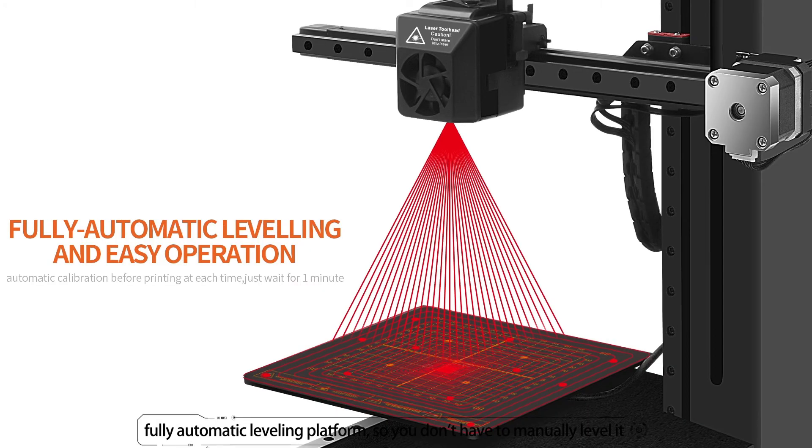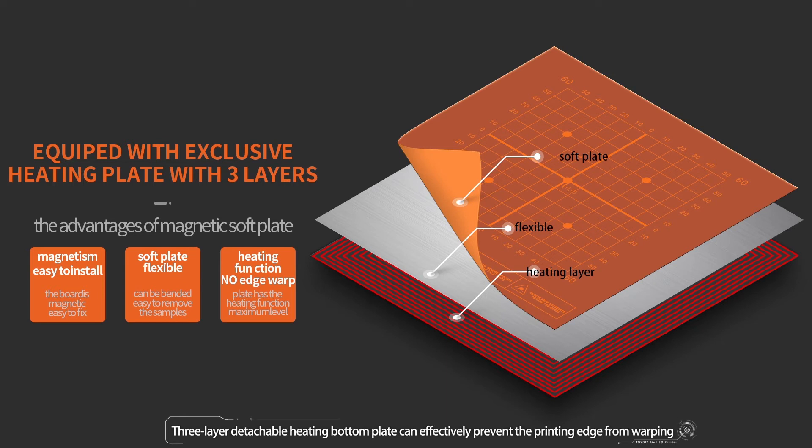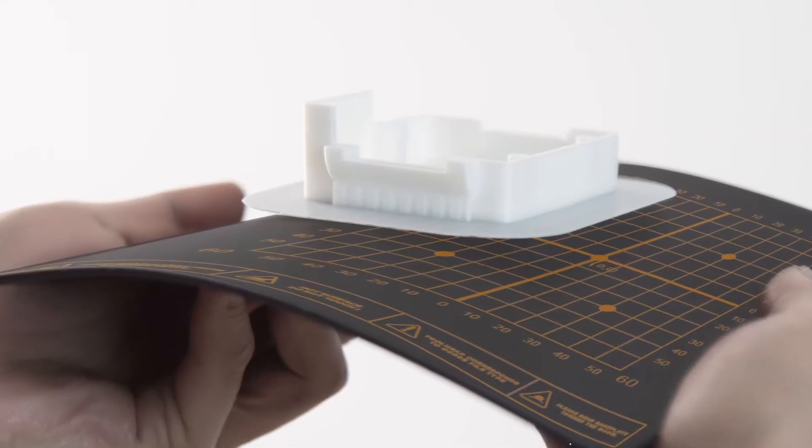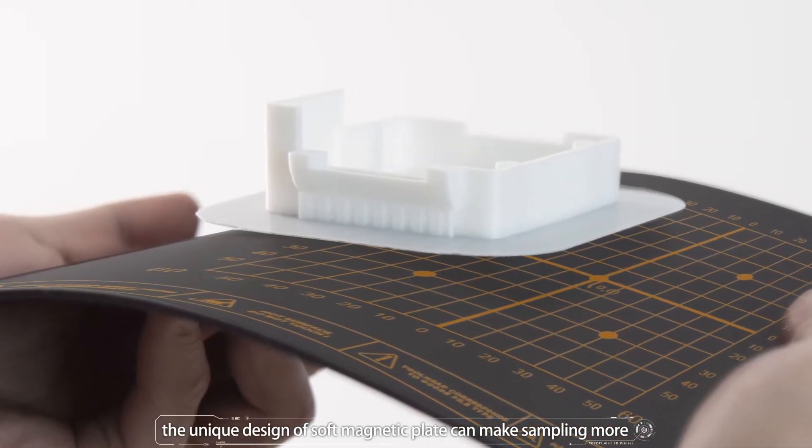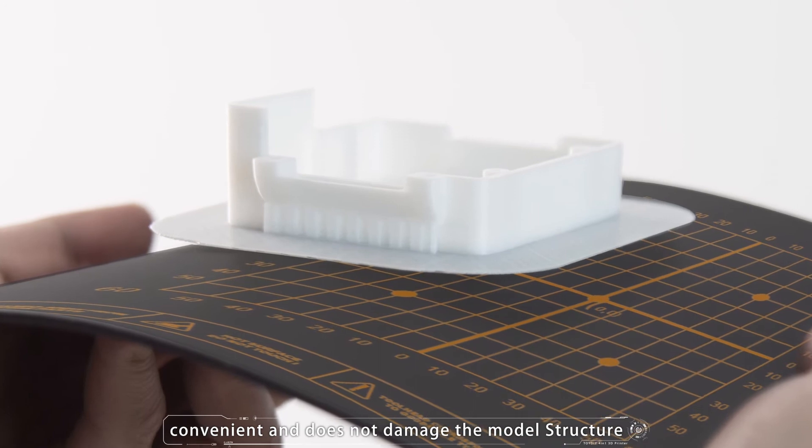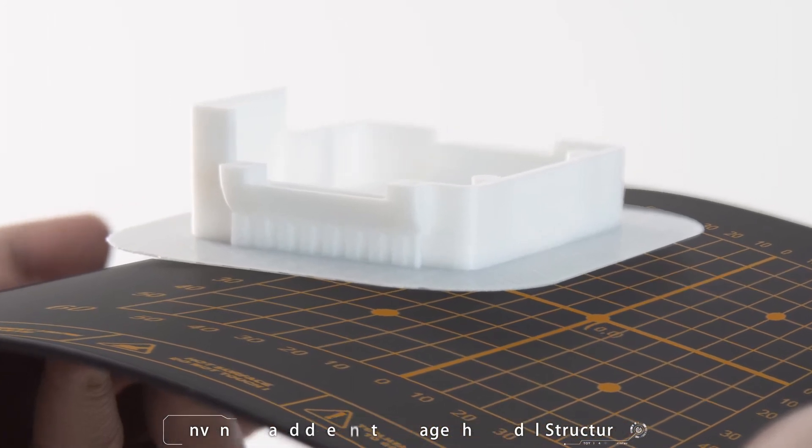Fully automatic leveling platform, so you don't have to manually level it. Three-layer detachable heating bottom plate can effectively prevent the printing edge from warping. The unique design of soft magnetic plate can make sampling more convenient and does not damage the model structure.